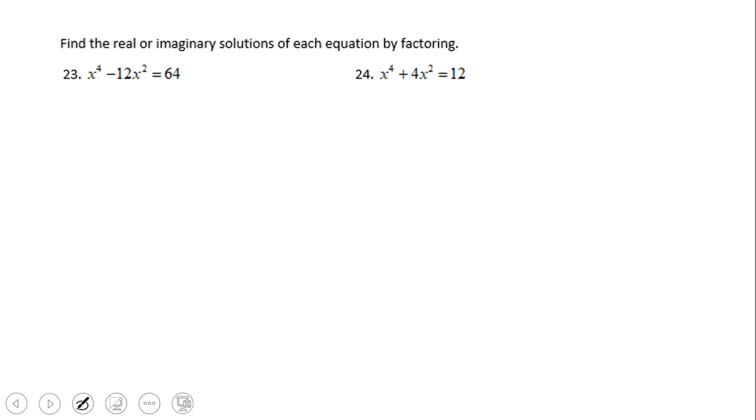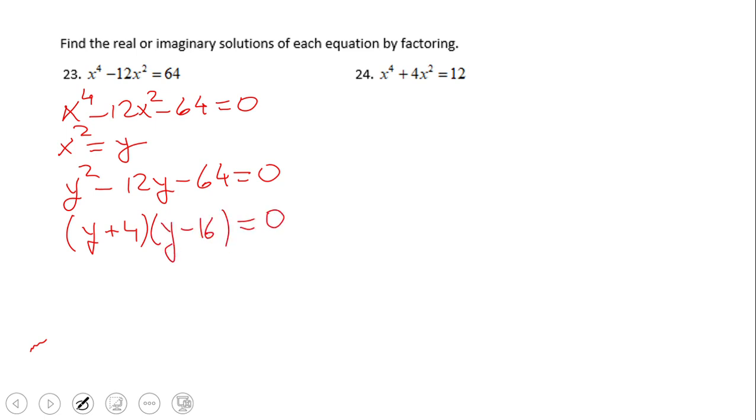And let's take a look at the last two problems, which are fourth degree polynomial equations. First of all, we want to have equals to 0 here, so we're going to subtract 64. Again, we're going to do a substitution here: x squared equals y, and that will give us a quadratic equation, y squared minus 12y minus 64 equals 0. We can factor out this quadratic and we have y plus 4 times y minus 16 equals 0. And that will give us y equals negative 4 and y equals 16, right? And don't forget, y is nothing else than x squared, so we have two equations here: x squared equals negative 4 and x squared equals 16.